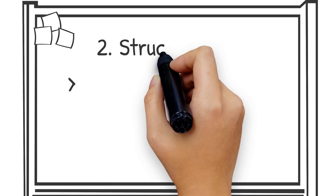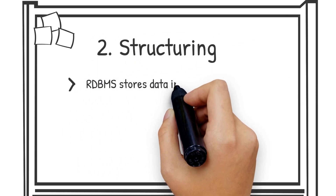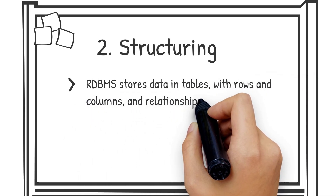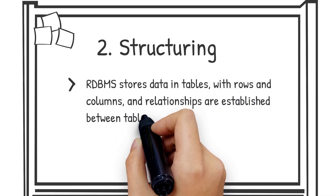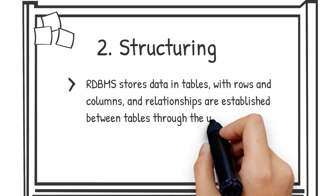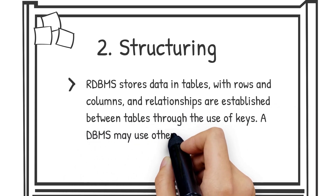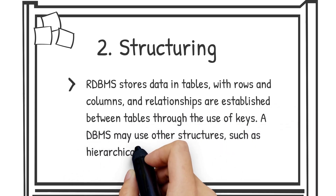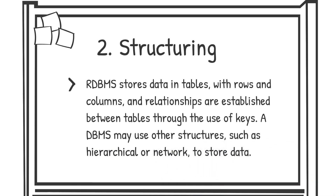Number two, structuring. RDBMS stores data in tables with rows and columns, and relationships are established between tables through the use of keys. A DBMS may use other structures, such as hierarchical or network, to store data.